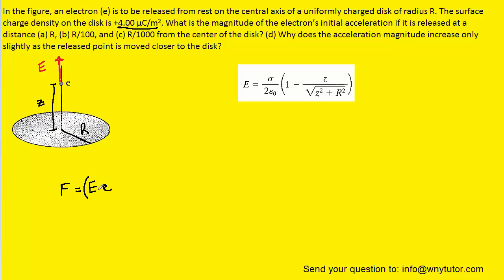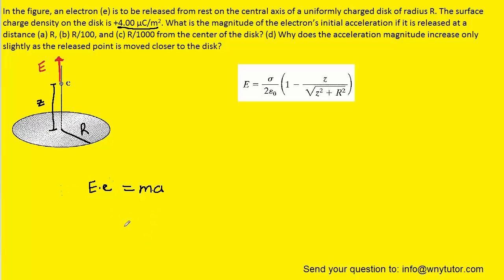We can take the electric force — which is the product of E and e — and set that equal to mass times acceleration. This is Newton's second law: the net force acting on an object equals its mass times its acceleration. Solving for acceleration by dividing both sides by the mass, the acceleration equals the electric field times the charge divided by the mass of the electron.